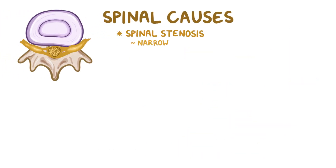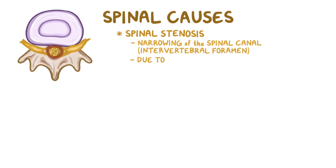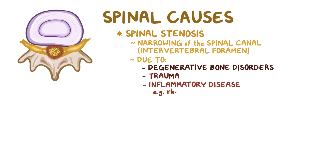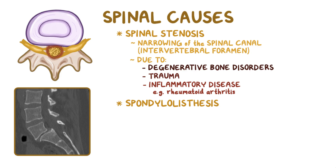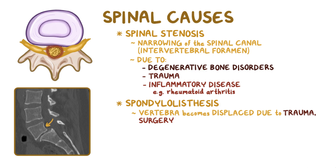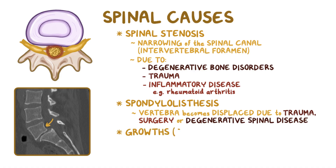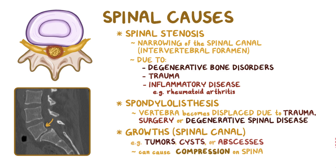Another cause of nerve compression is spinal stenosis, which is the narrowing of the spinal canal or intervertebral foramen. This is often due to degenerative disorders of the bone, trauma, or inflammatory diseases like rheumatoid arthritis. Spondylolisthesis is a condition where one vertebra slips or becomes displaced due to trauma, surgery, or degenerative spinal disease, and presses on the nearby nerve roots. Finally, any growths within the spinal canal like tumors, cysts, or abscesses can cause compression of the spinal nerves.